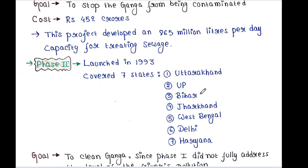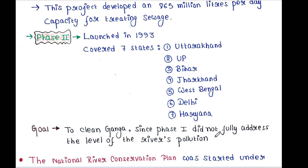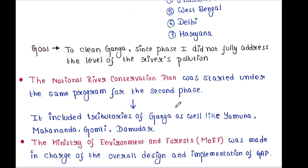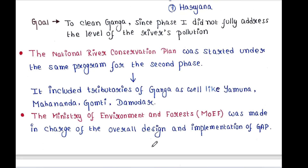Phase 2 covered seven states: Uttarakhand, Uttar Pradesh, Bihar, Jharkhand, West Bengal, Delhi, and Haryana. The goal of Phase 2 was to clean the Ganga, since Phase 1 did not fully address the level of the river's pollution. The National River Conservation Plan was started under the same program for the second phase and included tributaries of Ganga as well as Yamuna, Mahananda, Gumti, and Damodar. The Ministry of Environment and Forests, MOEF, was made in charge of the overall design and implementation of GAP.